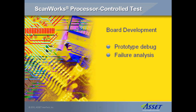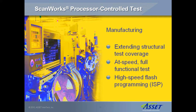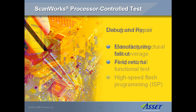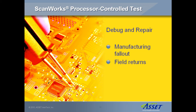Board developers use processor controlled test, or PCT, for prototype debug and failure analysis. In manufacturing, PCT is used to extend structural test coverage, to provide at-speed full functional testing, and high-speed flash programming.